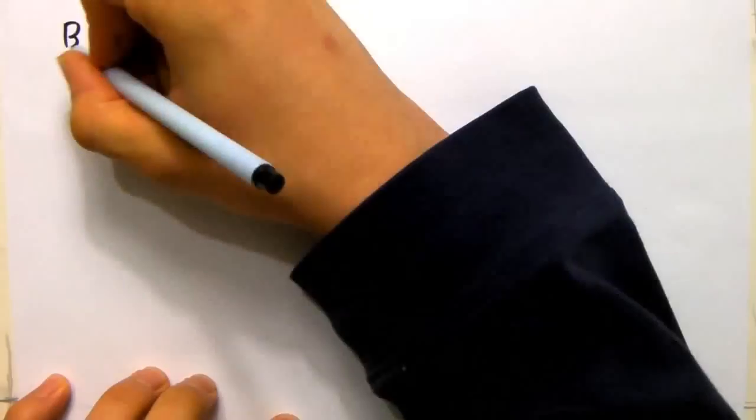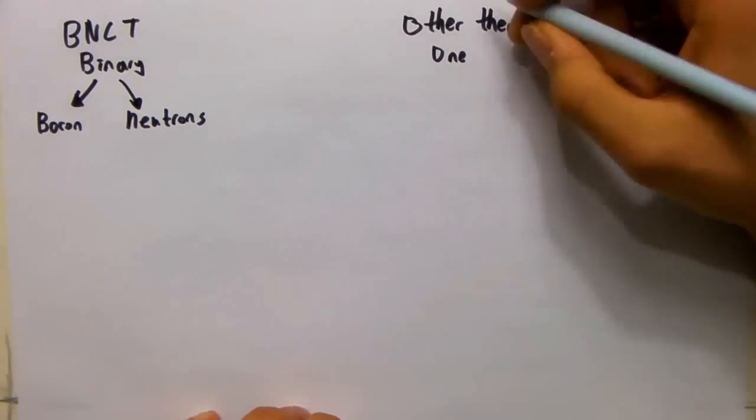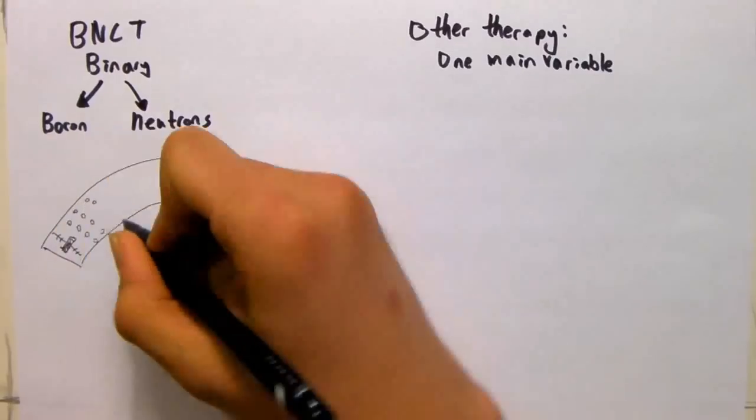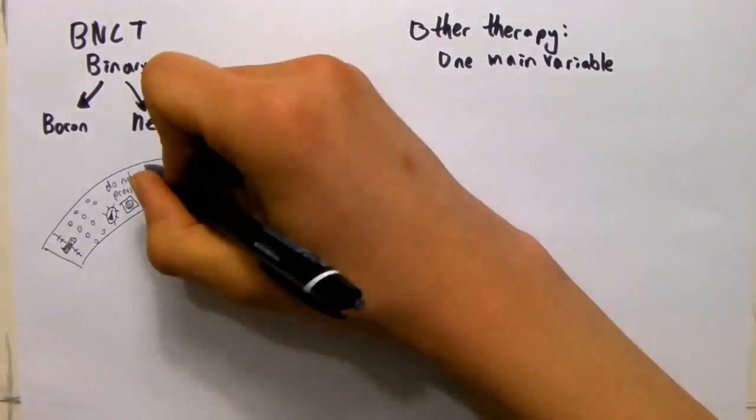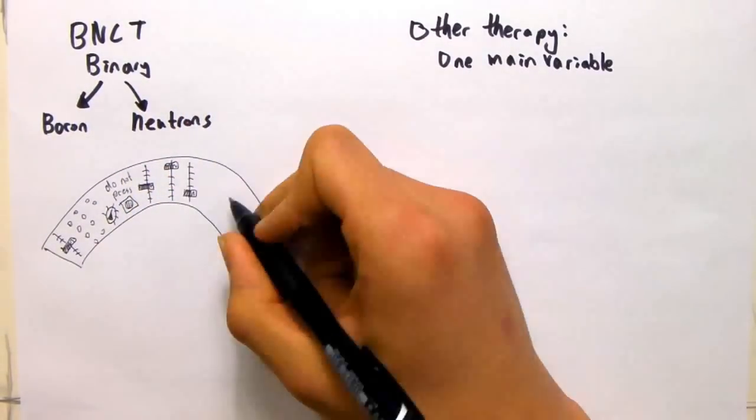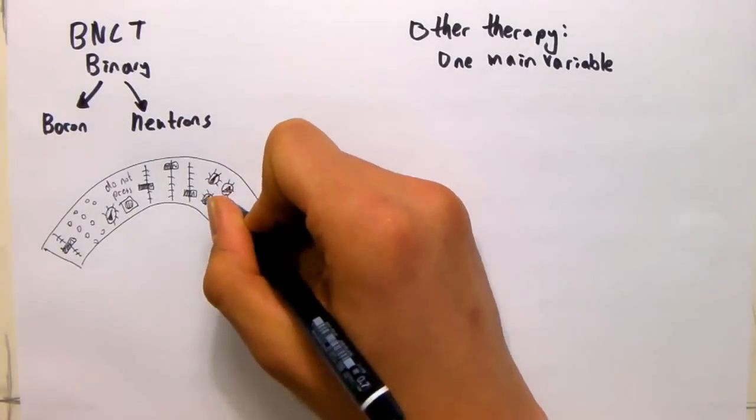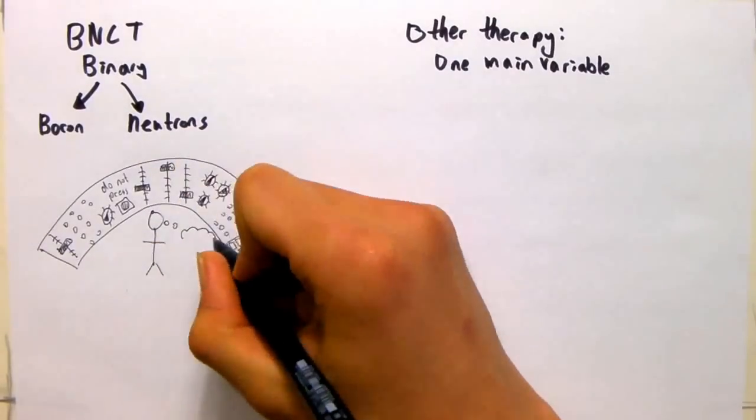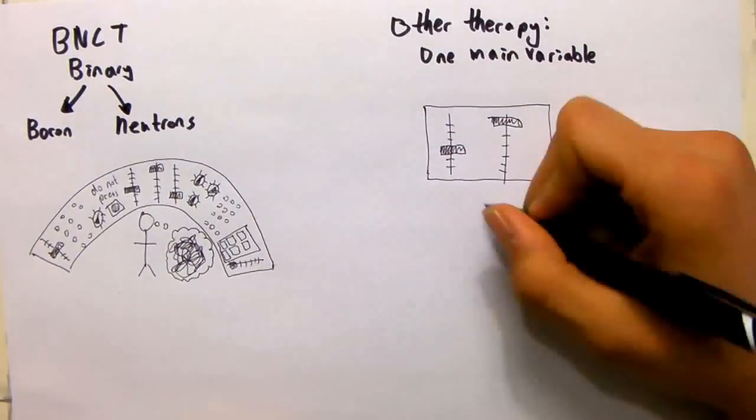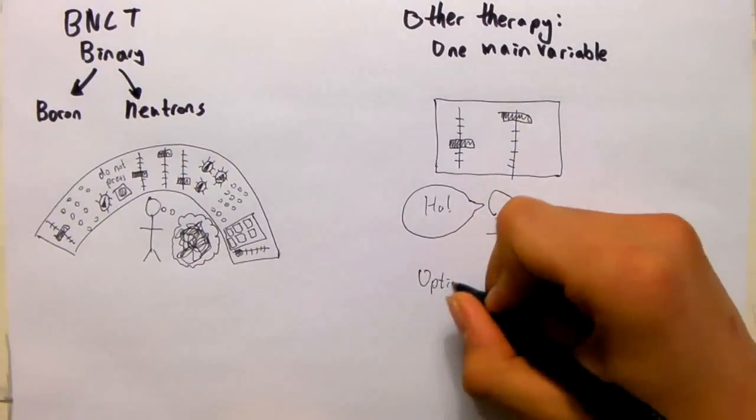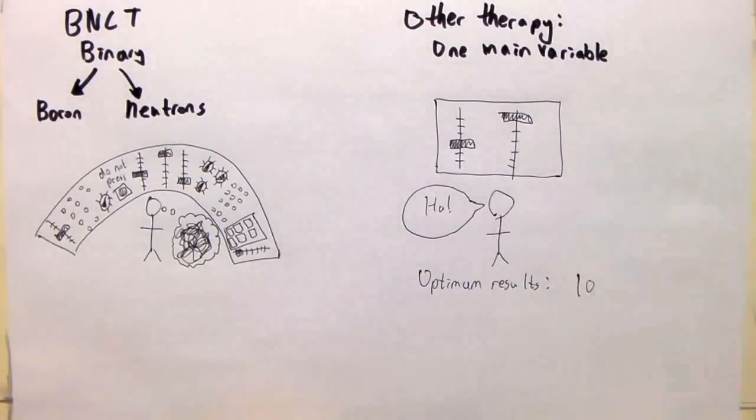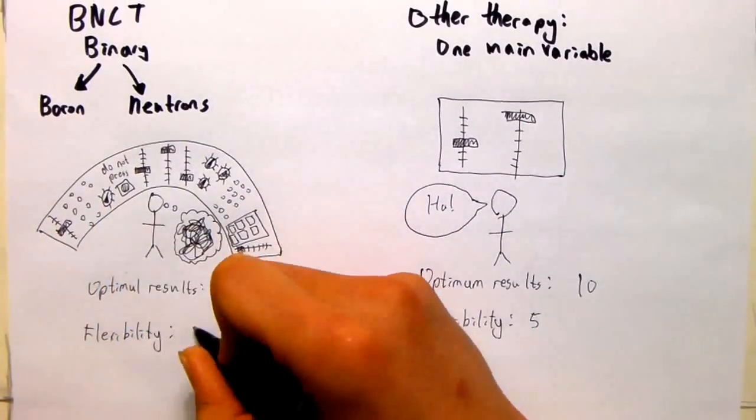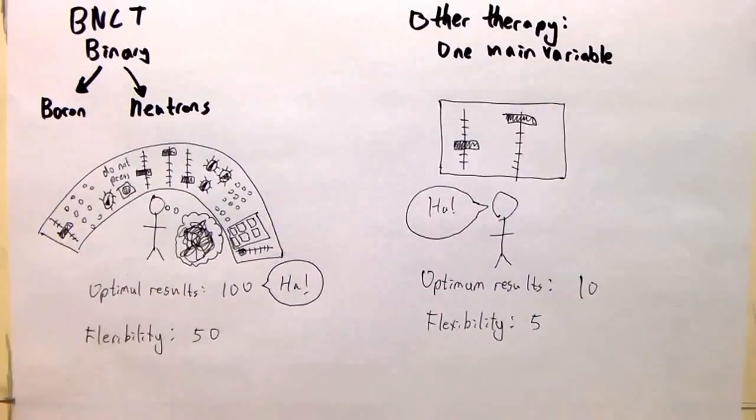BNCT being a binary therapy is an important factor. Binary therapy signifies that there are two components that can be adjusted, thus many more variables are involved compared to other therapy. This is both a blessing and a curse. The sheer number of variables means at the beginning of development, it takes much more time to develop and find the optimum values. However, at the end of the day, they will have more flexibility and potential than other forms of radiotherapy and will prove its worth.